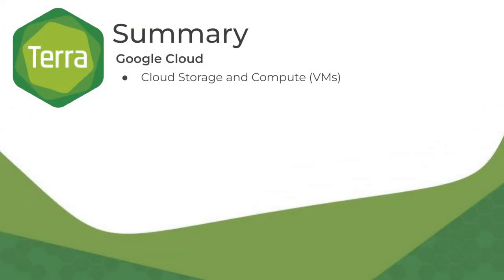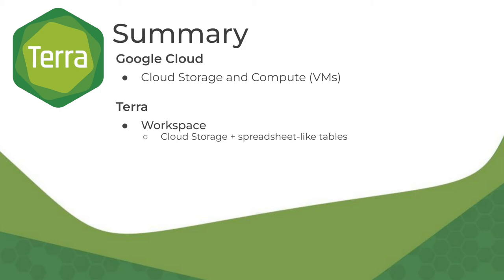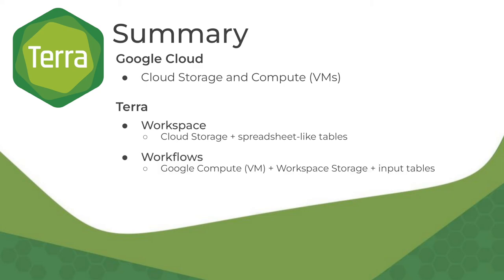In summary, Terra runs on Google Cloud Infrastructure, and uses resources like cloud storage and VMs to store and analyze data. Your Terra workspace includes dedicated cloud storage and integrated data tables. Terra sets up a Google Cloud VM to run a workflow analysis. The VM is integrated with workspace storage and workspace data tables.